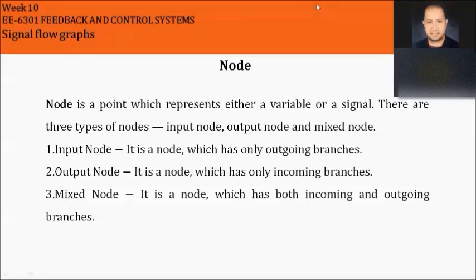The mix node is a node which has both incoming and outgoing branches — it combines the input node and the output node. This is the representation in our signal flow graph. Later, we will have an example.